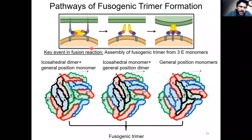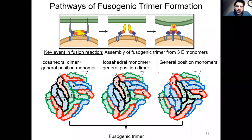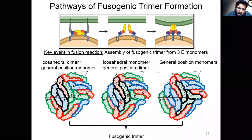The E-protein dimer is converted into the E-protein trimer through disruption of the dimer, a conformational change in the disrupted monomers, and then reorganization into the trimer. A close inspection of the Zika virus structure shows multiple pathways through which this trimer formation may be achieved. For instance, two blue monomers could combine with a red monomer to form the fusogenic trimer; alternatively, a blue monomer could combine with a red and a green monomer; or three green monomers lying next to each other could reorganize with each other to assemble the fusogenic trimer.